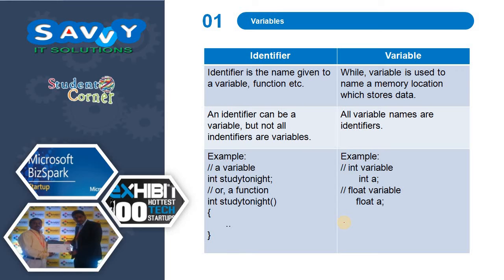Now the difference between identifiers and variables: identifiers are the names given to a variable or a function, while a variable is used to name a memory location which stores data. An identifier can be a variable, but not all identifiers are variables. All variable names are identifiers. Here the example shows int as the variable and a function identifier.